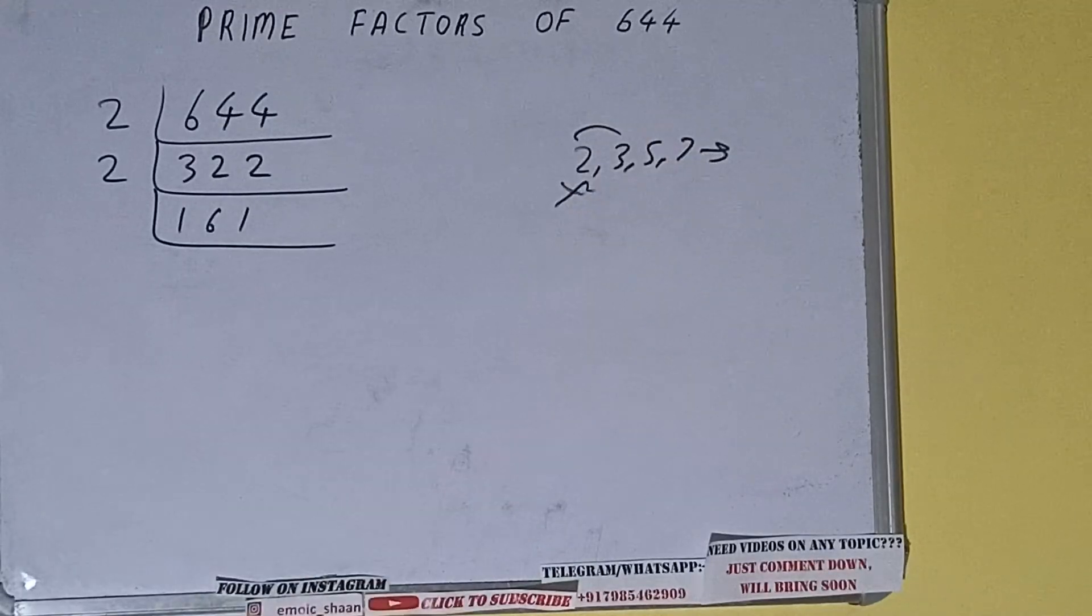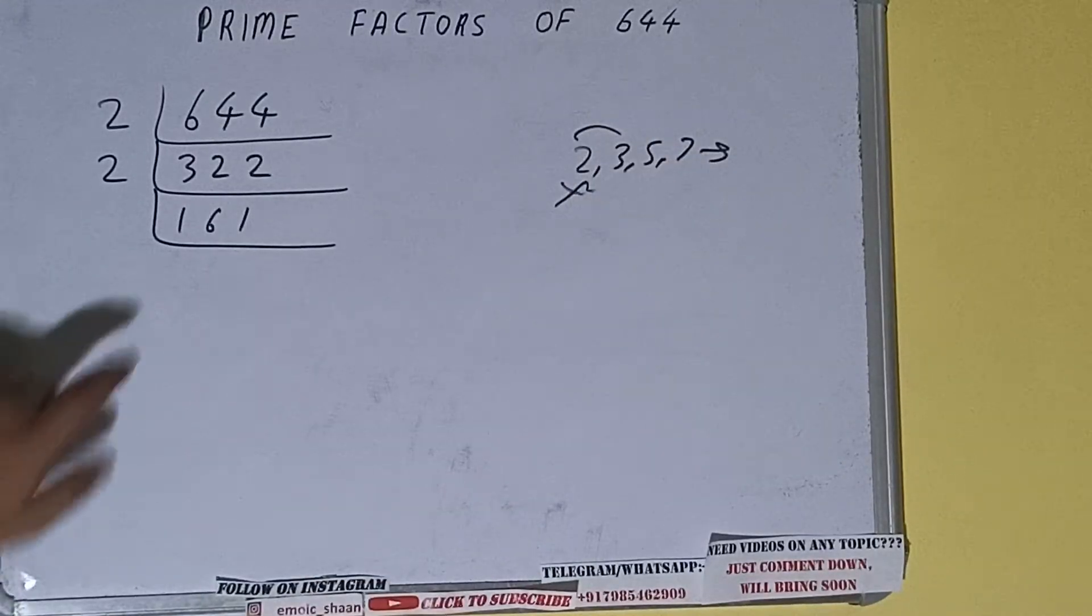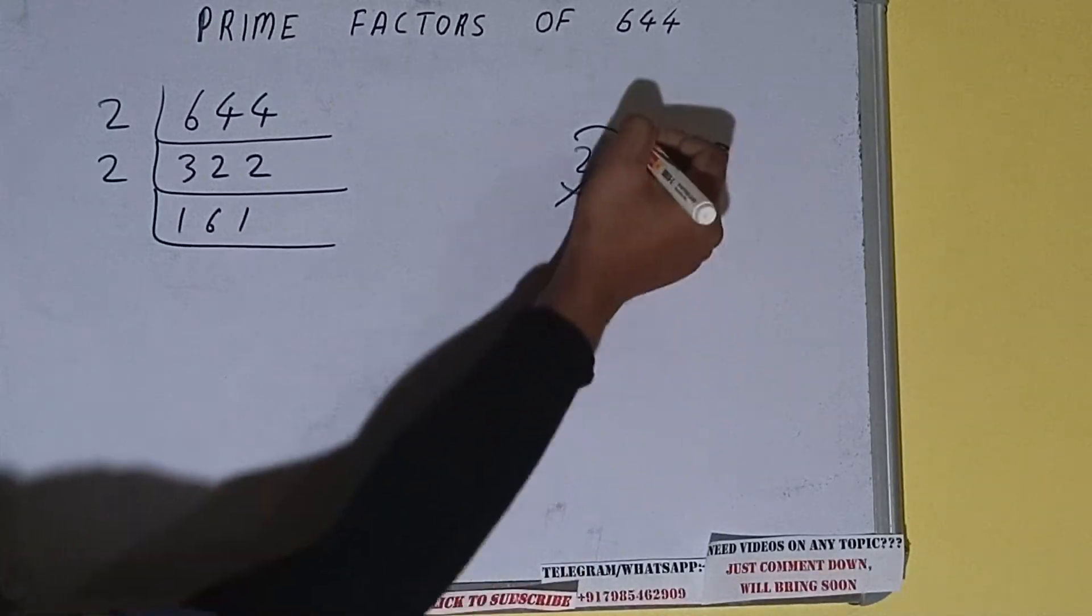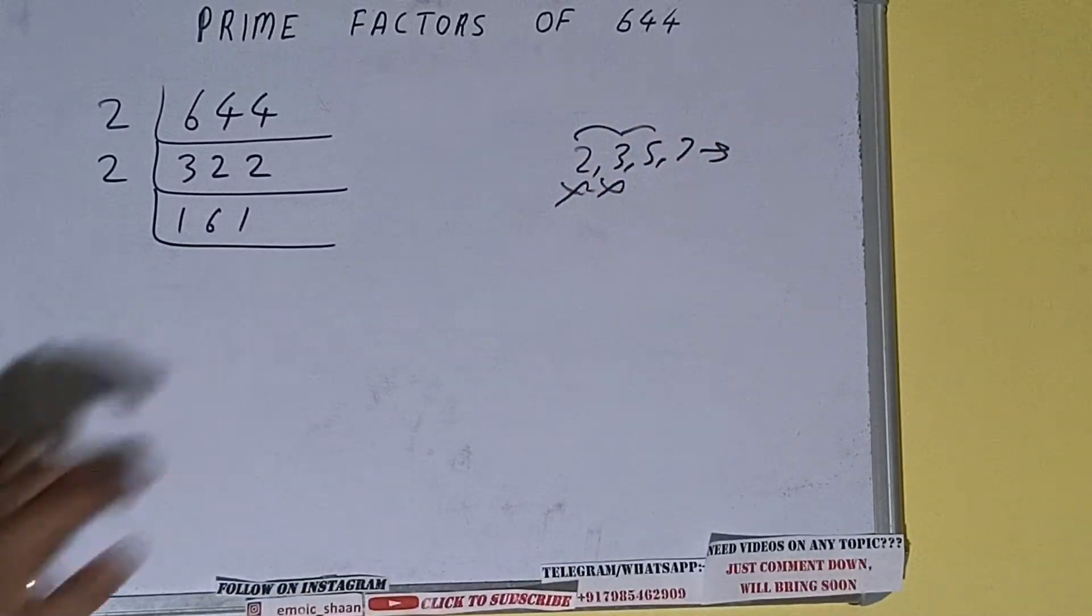3+5 is 15, 1+1... it is not divisible by 3. So let's check with 5. The last digit is neither 5 nor 0, so it is not divisible by 5 also.